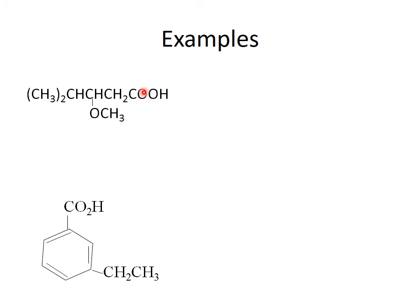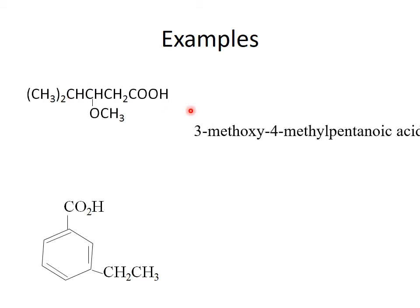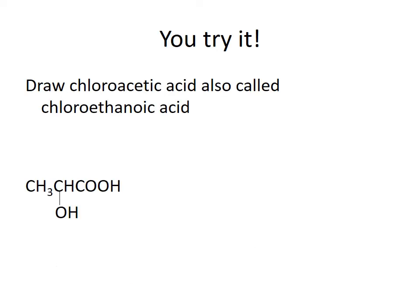If I look at this compound, I can see the longest chain — the principal chain — has one, two, three, four, five carbons. So it's going to be a pentanoic acid. The substituents attached are a methoxy on carbon three and a methyl on carbon four, giving 3-methoxy-4-methylpentanoic acid. The next compound has benzoic acid as the base and an ethyl on the number three carbon, so it's 3-ethylbenzoic acid.